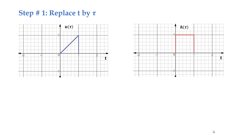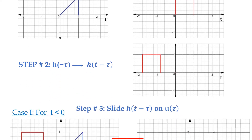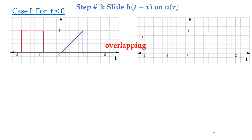Step one is to replace the time t by a dummy variable tau. Step two is to flip the impulse response and advance it. Step three is to slide this flipped version of the impulse response from minus infinity to infinity.